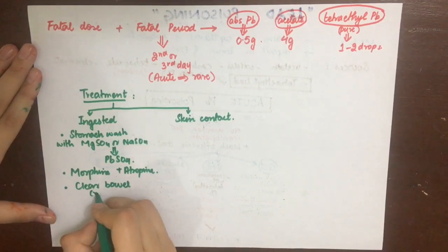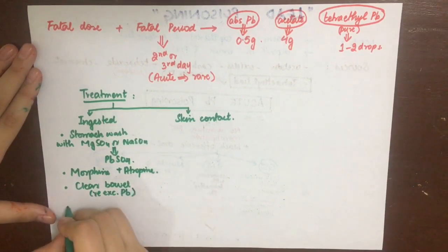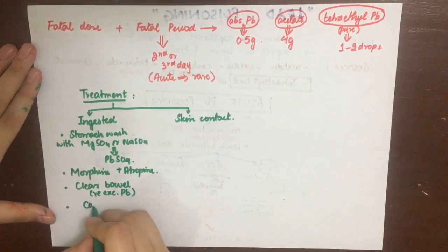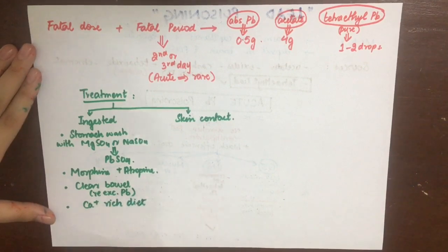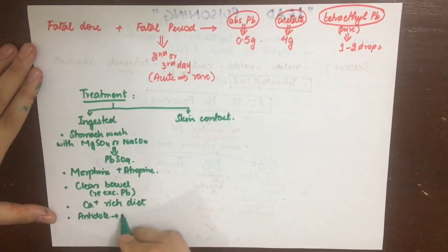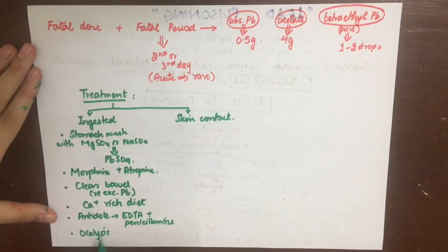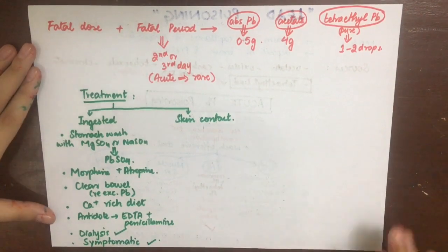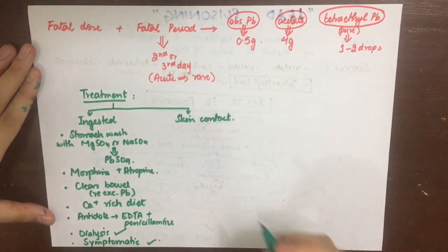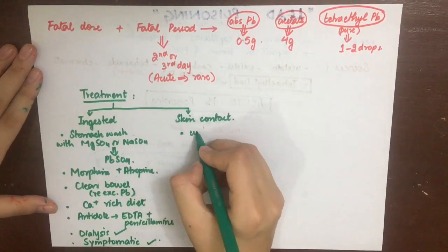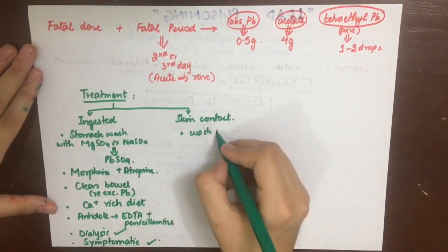The bowel is cleared at regular intervals to get rid of the re-excreted lead. A calcium-rich diet such as milk, calcium salts, and vitamin D will favor skeletal deposition of lead. EDTA and penicillamine are the antidotes for lead. Dialysis — both peritoneal and hemodialysis — can be done, and the rest of the treatment is symptomatic.